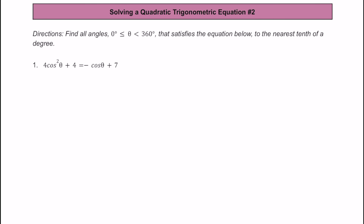Let's practice solving a quadratic trig equation together. For this particular trig equation, we're going to solve for all the solutions that are between zero and 360 degrees, not including 360. And when we have to do some rounding, we'll go to the nearest tenth of a degree. To begin, I'm just going to start by rewriting this equation. So we have four times cosine squared of theta plus four, and that's going to be equal to negative cosine of theta plus seven.